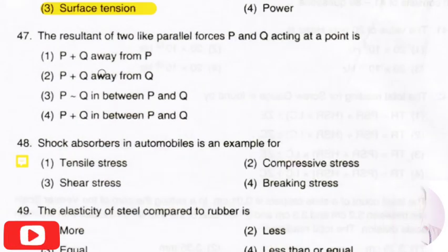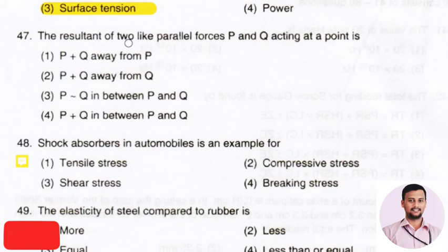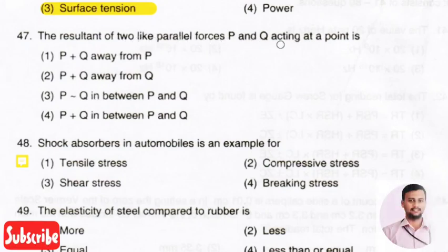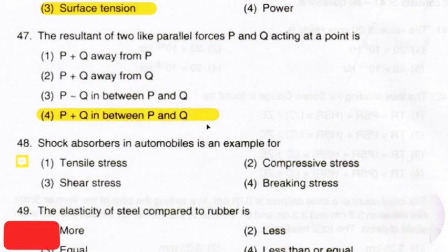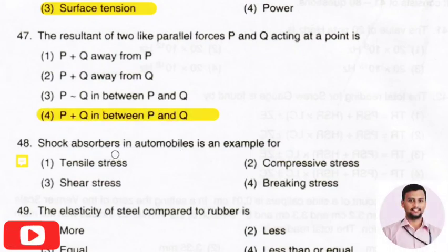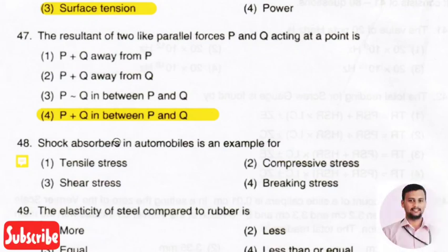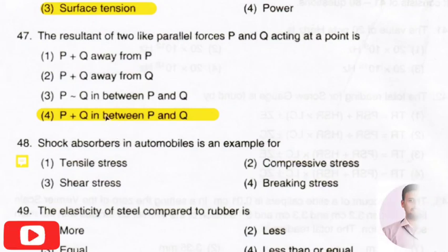The next question: the resultant of two like parallel forces P and Q acting at a point. The right answer is option 4 — the resultant force will be P + Q, and it lies between P and Q.